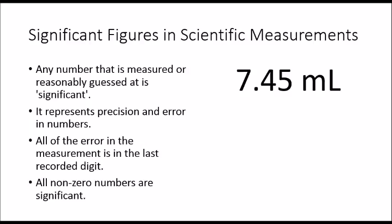All non-zero numbers are significant—that is, they're assumed to be measured or reasonably guessed at. If you look at 7.45 here, 5 is our last recorded digit, so there are a total of 3 significant figures in this number.